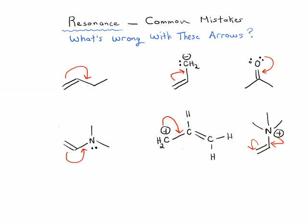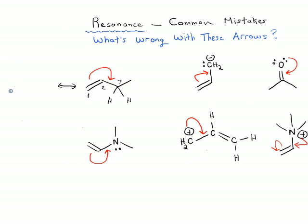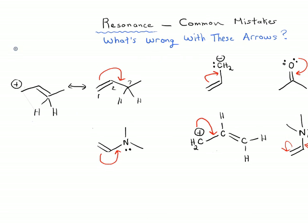Okay, so let's have a look here. What is this arrow telling us to do? This arrow is telling us that we are going to break this double bond between carbon 1 and carbon 2, and we're going to form a new pi bond between carbon 2 and carbon 3. So what would that mean? Well, we would form this. That's what this arrow is telling us to do, telling us to break C1 to C2 and form C2 to C3 pi bond.